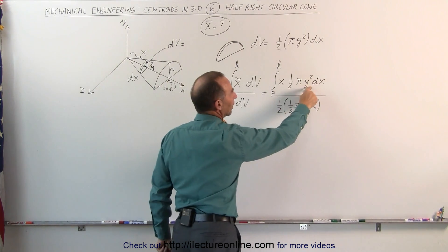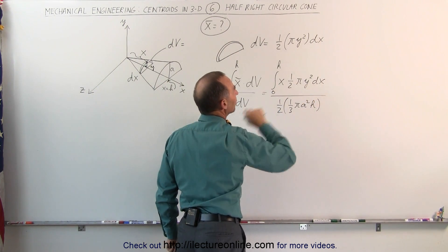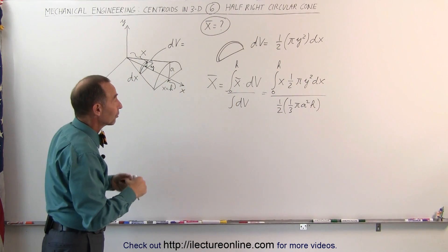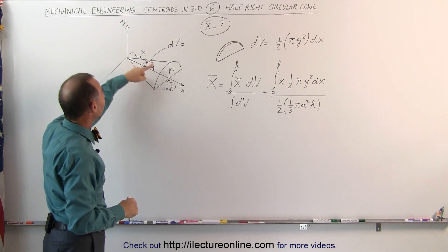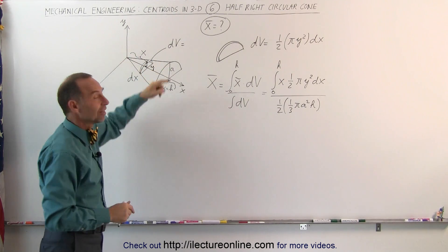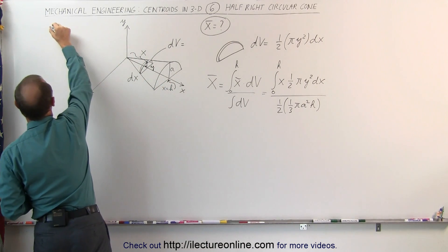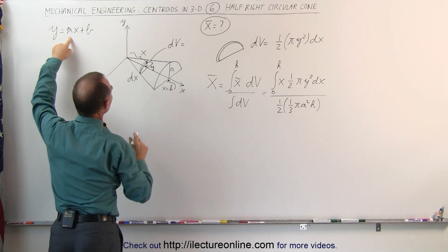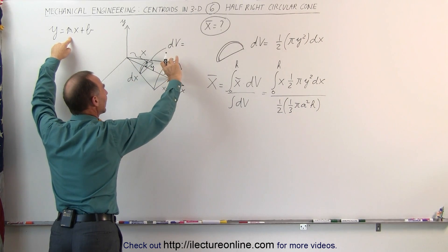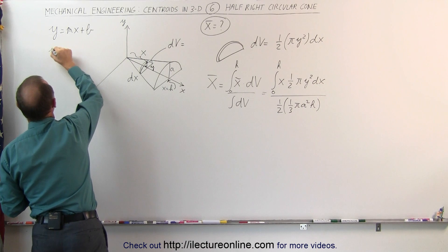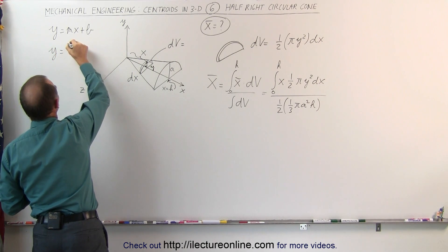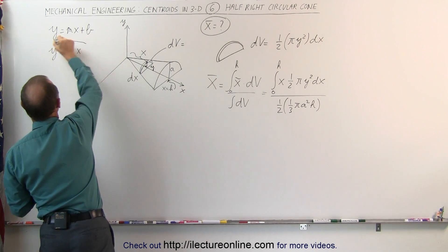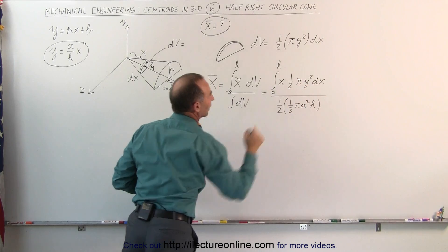We have y squared and dx in the numerator integral, so we need to convert y in terms of x. We can use the top line of the cone, which is a straight line, using y equals mx plus b. Here m is the rise over the run, which is a over h, and b is zero. So y equals (a/h) times x.